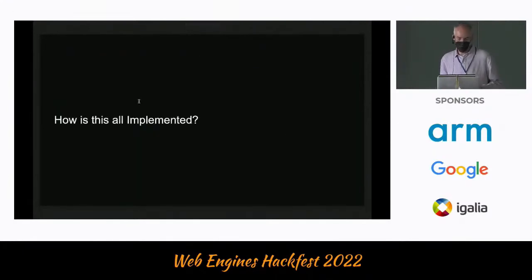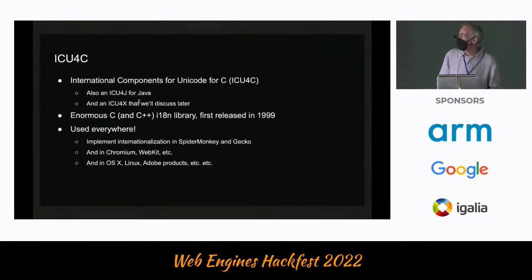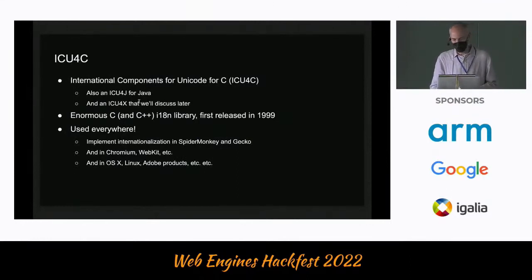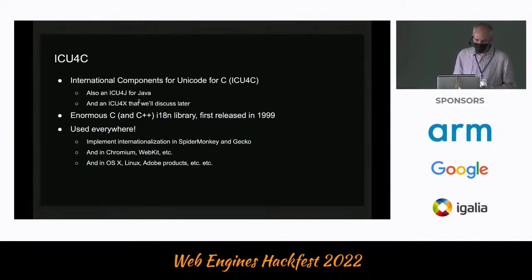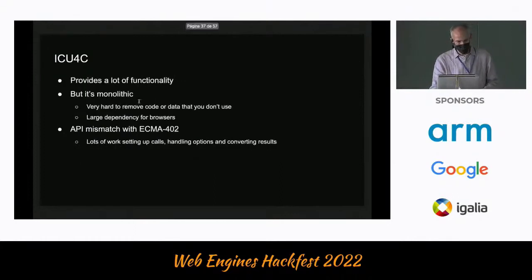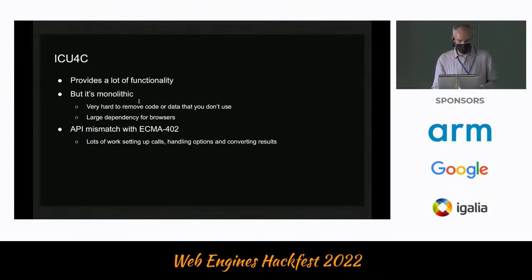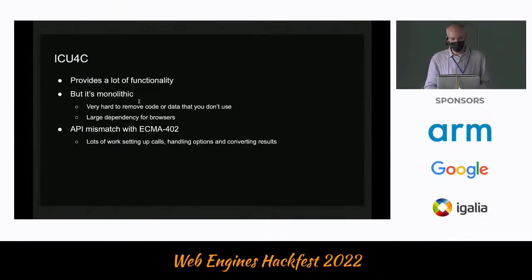So how is all of this implemented? The short answer is ICU4C — International Components for Unicode for C. There's also ICU4J for Java and ICU4X which I'll talk about more later. It's an enormous C and C++ library developed by IBM, first released in 1999, and used pretty much everywhere — Mozilla for SpiderMonkey and Gecko, also Chromium, WebKit, macOS, Linux, and many other places. It provides a lot of functionality but it's also monolithic, so it's very hard to remove code or data you don't want to use, ending up being a large dependency for browsers. There's also an API mismatch with ECMA-402, so there's lots of work to set up calls to handle options and to convert results.